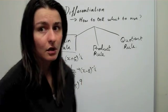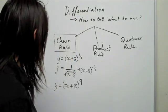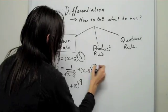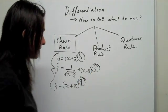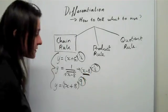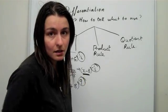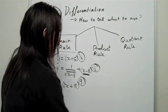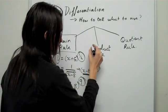It doesn't matter what the formula is—it can be log, it can be whatever—but you use the chain rule for these kinds of cases. So how is that different from your product rule?